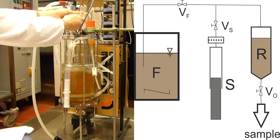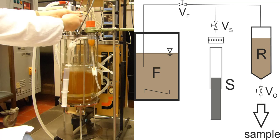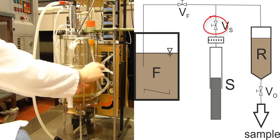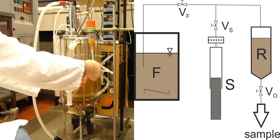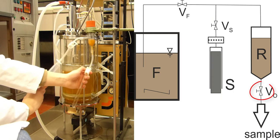Subsequently, the valve to the fermenter can be closed again and then the syringe valve can be opened to push the sample out via the opened valve O.